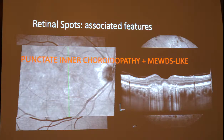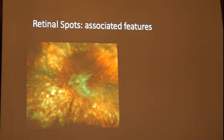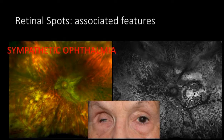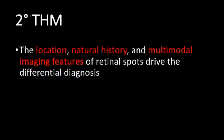The other associated feature to consider is the history of the patient. This patient presented with yellow spots in the choroid and marked outer retinal and RPE atrophy on autofluorescence, but the history was crucial: the patient had undergone multiple surgeries in one eye and the inflammation was in the fellow eye, leading to the diagnosis of sympathetic ophthalmia. The second take-home message is that the location, natural history, and multimodal imaging features of the retinal spot are very useful when narrowing the differential diagnosis of retinal inflammation.